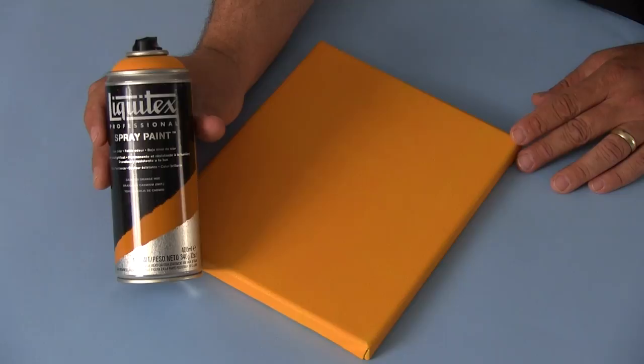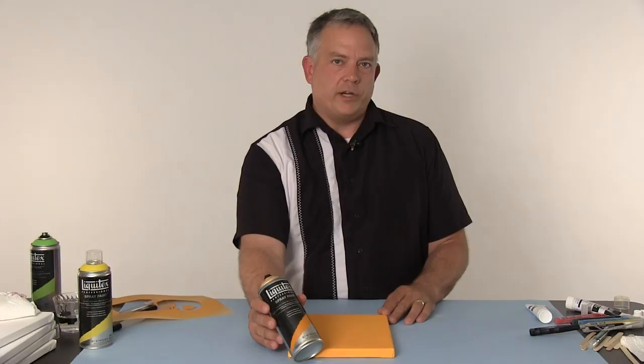The first thing that I've done is I've taken a blank canvas and I've coated it with a bright orange color in our Liquitex spray paint. Great things, it's fast, it's easy, and it creates a nice bright surface for contrast.